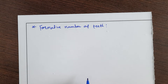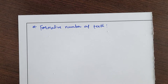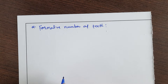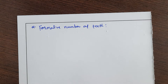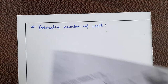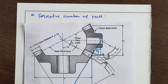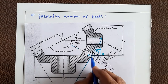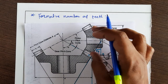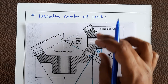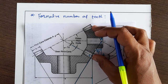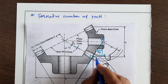The next topic in bevel gears is formative number of teeth, or equivalent spur gear. A bevel gear is kinematically equivalent to an imaginary spur gear in a plane perpendicular to the tooth at the large end. If we consider the pinion, the large end is where the bevel gear is equivalent to this imaginary spur gear.